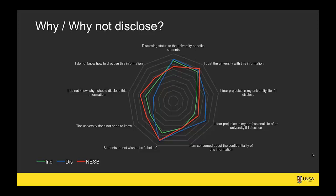This spider web graph tells us that students with disabilities fear prejudice in their professional life and university life the most out of these three equity groups — far more than non-English speaking background students and far more than Indigenous students, who appear to fear that very little. However, students with disabilities and non-English speaking background students certainly fear much more than Indigenous students being labelled — whether that's discrimination, or whether Indigenous students fear it less because that Indigenous label is how they access targeted services is a room for further study.